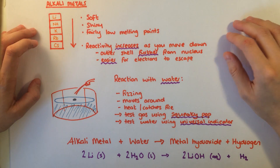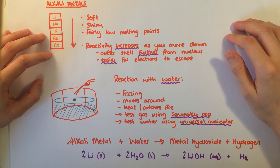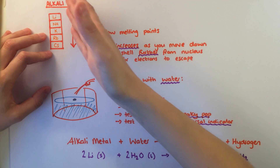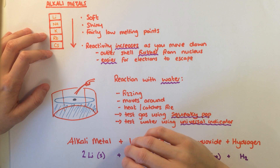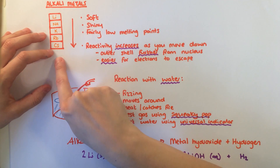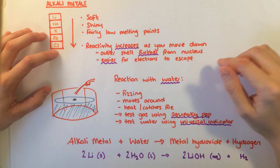Alkali metals are all soft — they can be cut with a knife — they are shiny and they have low melting points. These melting points decrease as you move down the group, from around 180 degrees C for lithium to 30 degrees C for cesium.